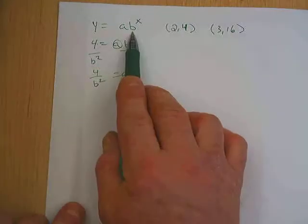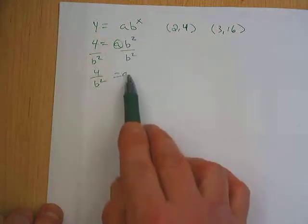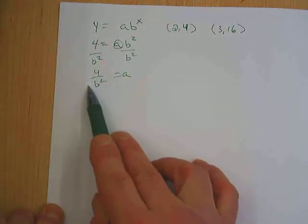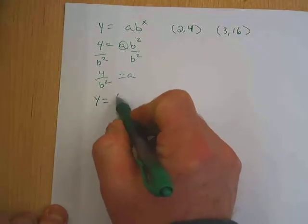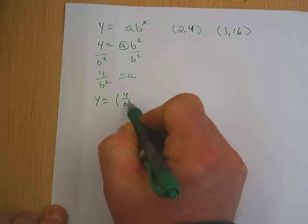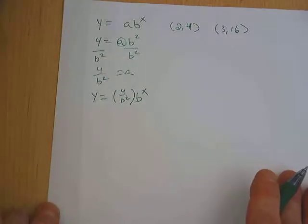Now the next thing I want to do is go back to my equation, replace a with what I just figured it out to be in terms of b. So y equals 4 over b squared times b to the x.